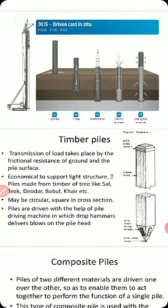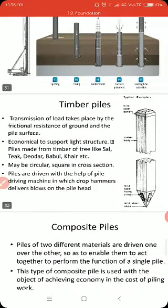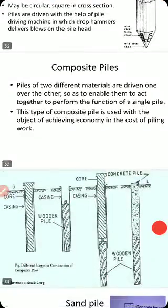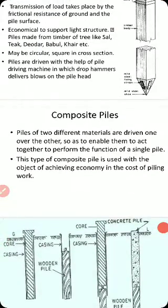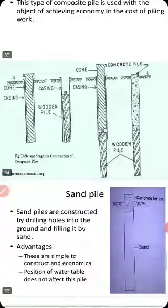Timber pile is another material classification. Transmission of load takes place by friction between the ground and the pile surface. They are economical to support light structures. Piles are made from timber or tree trunks and may be circular or square in cross-section. They are driven with the help of a pile driving machine using a drop hammer. Composite pile, as the name implies, is a pile made with two different materials, used to achieve an economical cost of piling work.